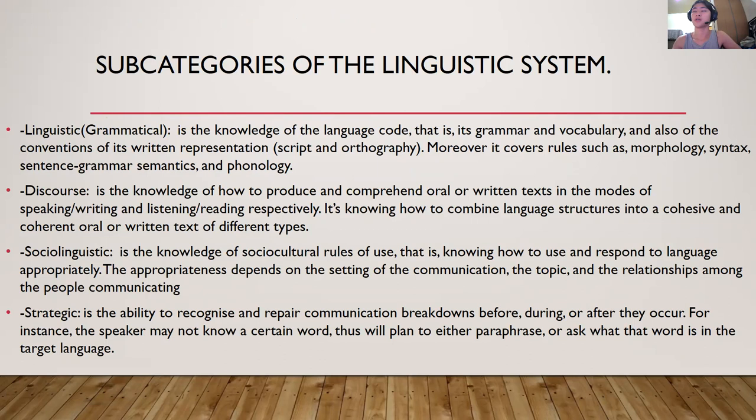These are the subcategories of the Linguistic System. The first is Grammatical competence — it's the knowledge of the language code, that is, its grammar and vocabulary, and also of the conventions of its written representation, script, and orthography. It covers rules such as morphology, syntax, sentence grammar, semantics, and phonology.